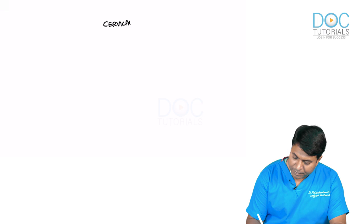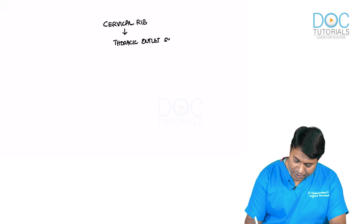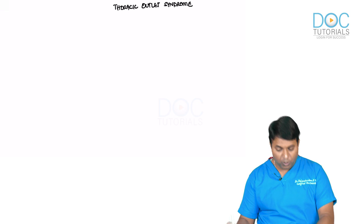Now moving on to a very important topic: cervical rib, and before that, thoracic outlet syndrome. Thoracic outlet syndrome is the most important topic in this chapter.